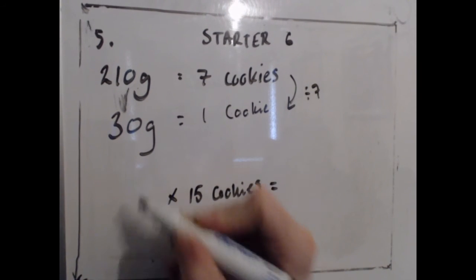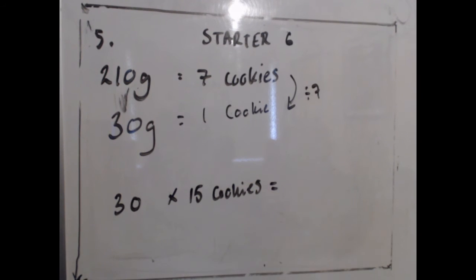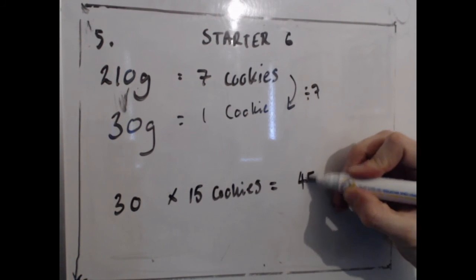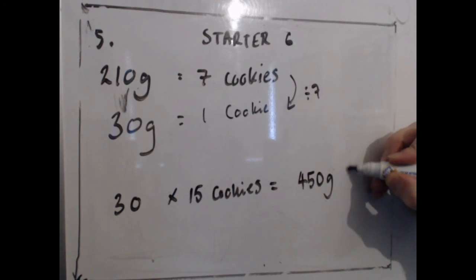And so to find how many I need for 15 cookies, just multiply 30 by 15, and you'll find that you need 450 grams of flour.